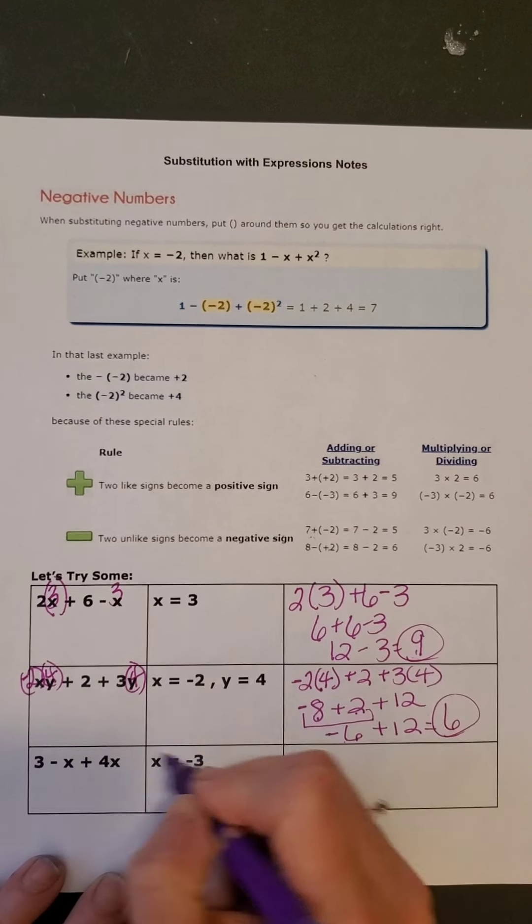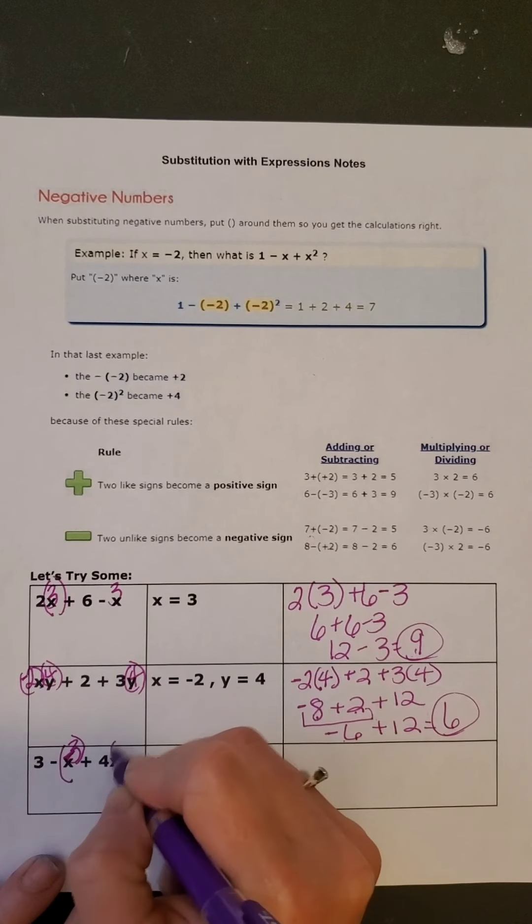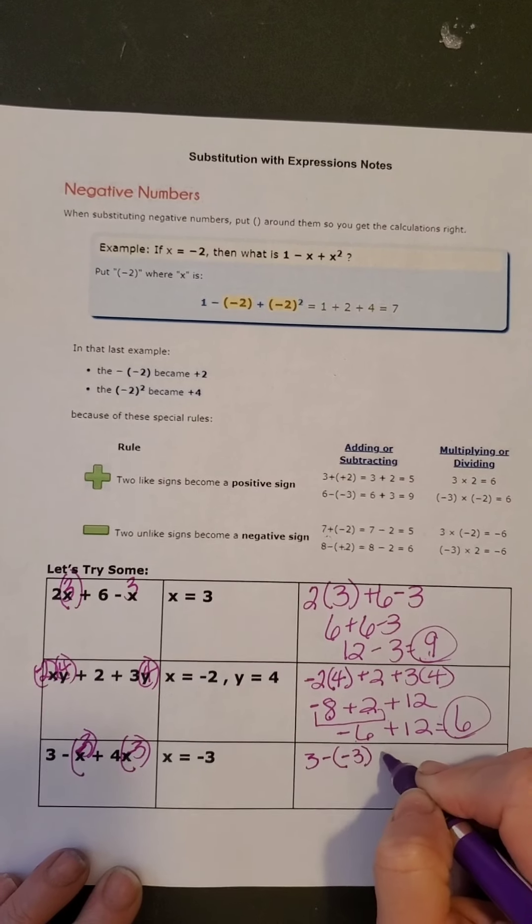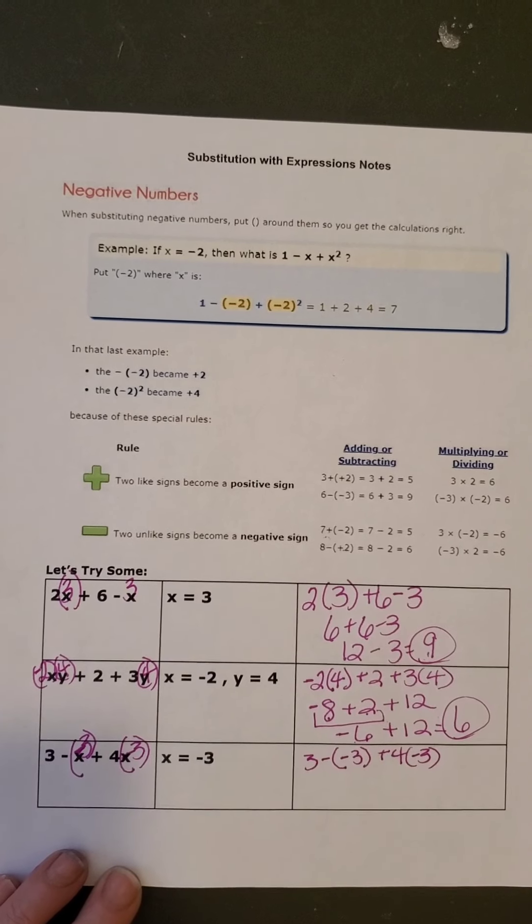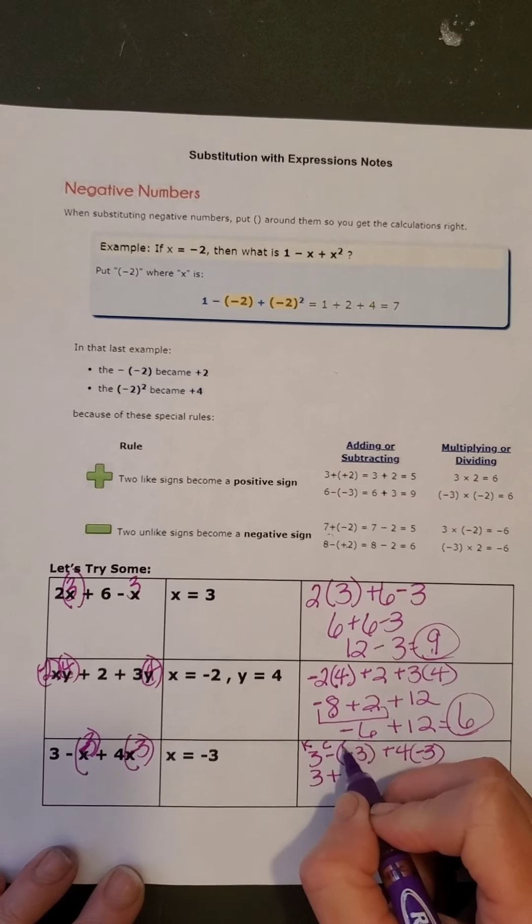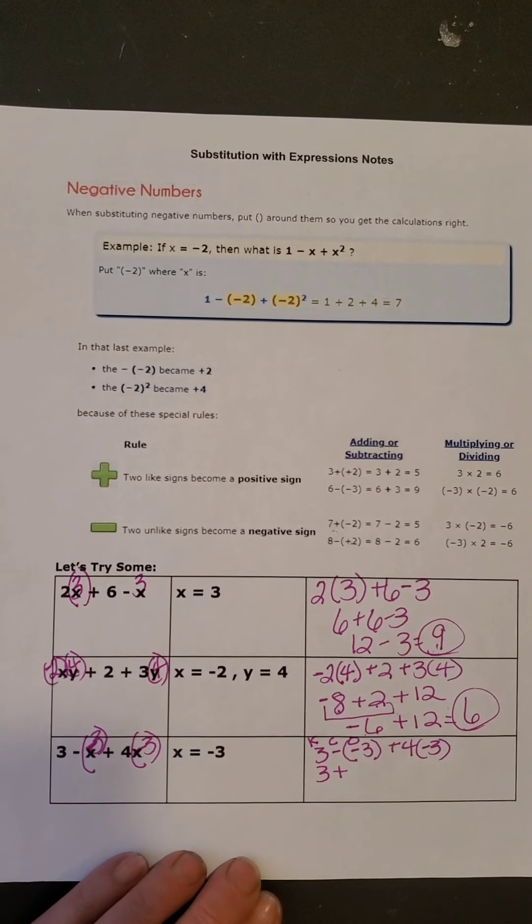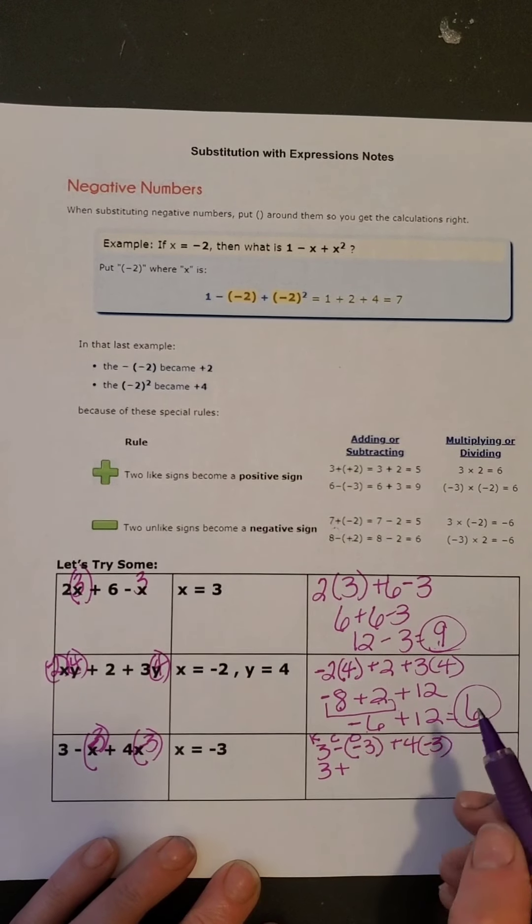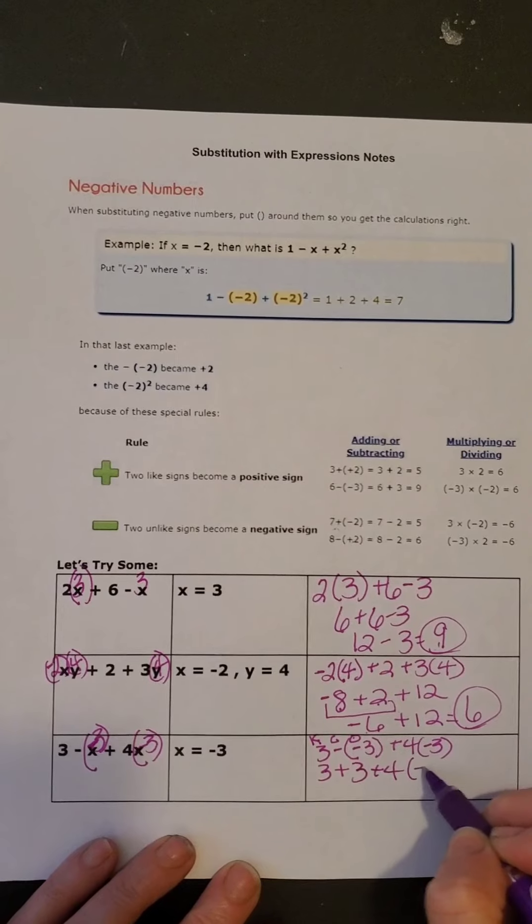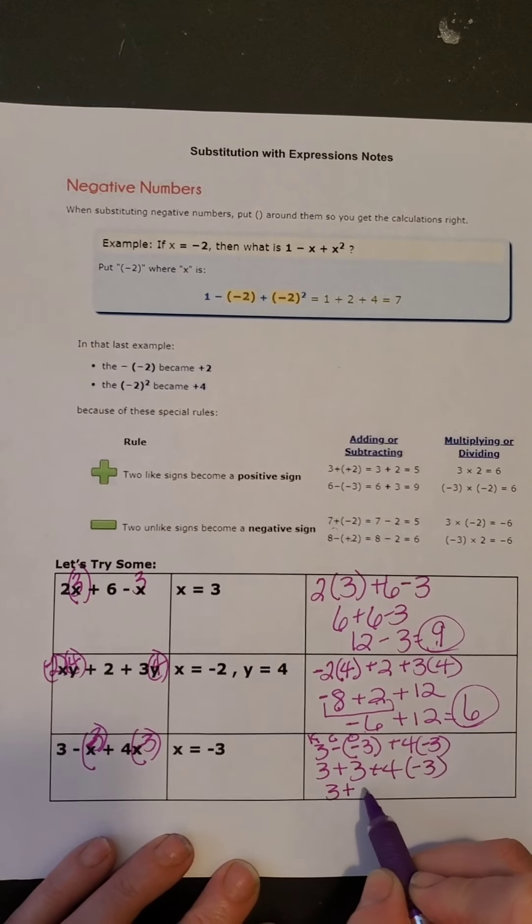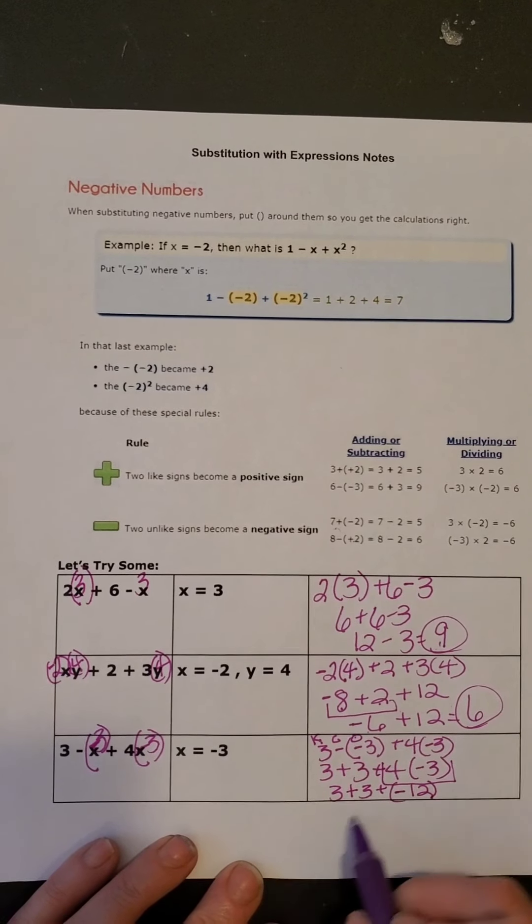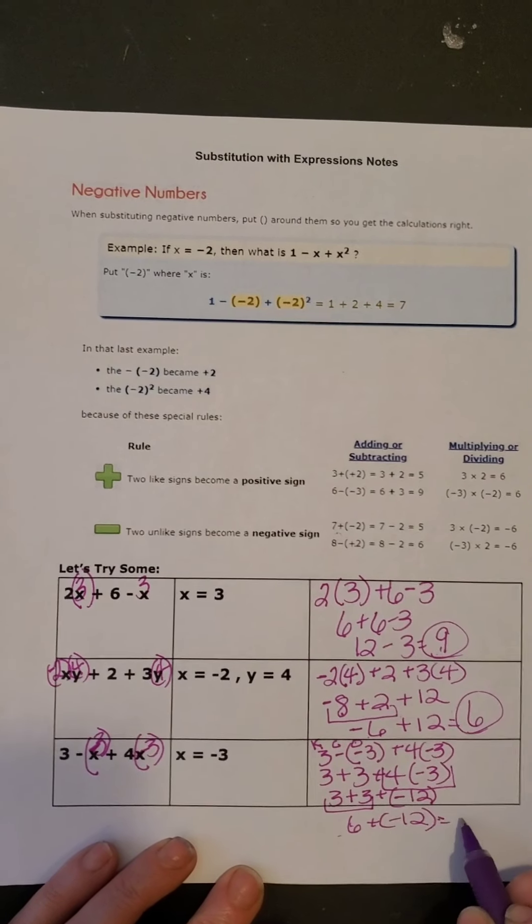So 3 minus x plus 4x, and x is negative 3, so I'm going to put a parenthesis there, put my negative 3 in. Now I'm going to come over here and write it. I need to rewrite this as addition. So this is going to be 3 plus, remember this is keep it, change it, opposite. So Jordan called in the middle of that, so I had to stop it and answer. But this is keep it, change it, opposite. So that becomes 3 plus 3 plus 4 times negative 3. Now, I got to do my 4 times negative 3 first because of order of operations, so that's negative 12. Then that's 6 plus negative 12, and 6 plus negative 12 is negative 6.